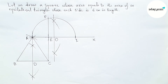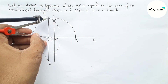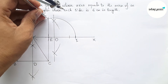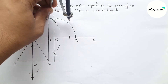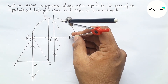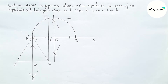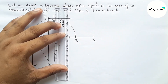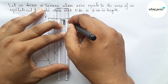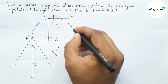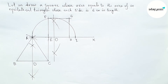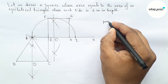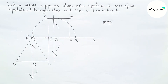Next, taking the length EF with the compass. Cutting here, putting the compass on point F and drawing an arc. Putting the compass here with the same length and cutting here. Joining these lines to complete our required square. Taking points G and H. So EFGH is the required square, and the area of triangle ABC equals the area of square EFGH.